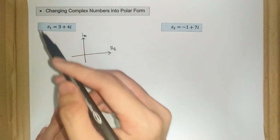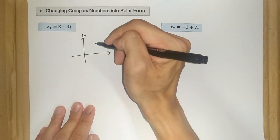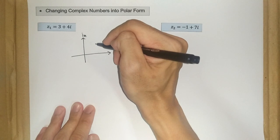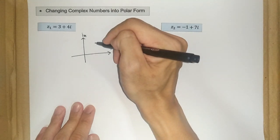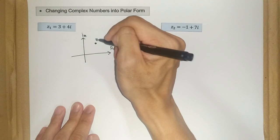So our point z1 here is 3, 4. So it locates in the first quadrant here. So we have 3, 4, somewhere here. So this is our z1.